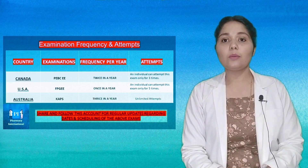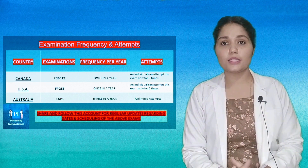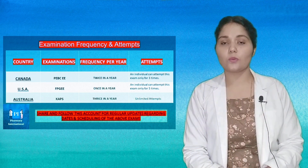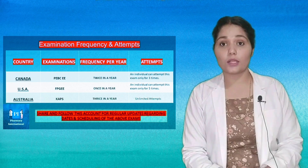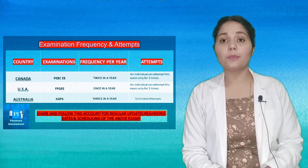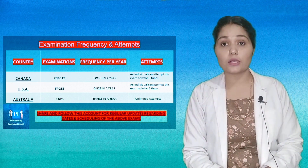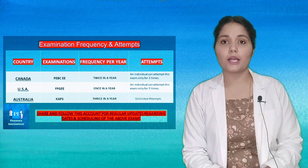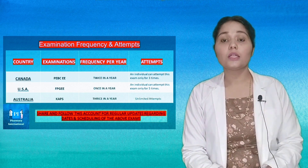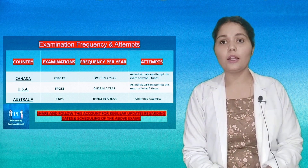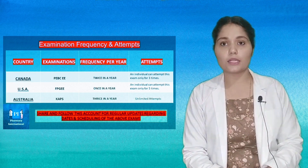Second is the USA. The name of the examination is FPGEE — Foreign Pharmacy Graduate Evaluating Examination. The frequency per year is once, meaning it's only once a year, and a person has a maximum of five attempts to appear and clear this particular examination.